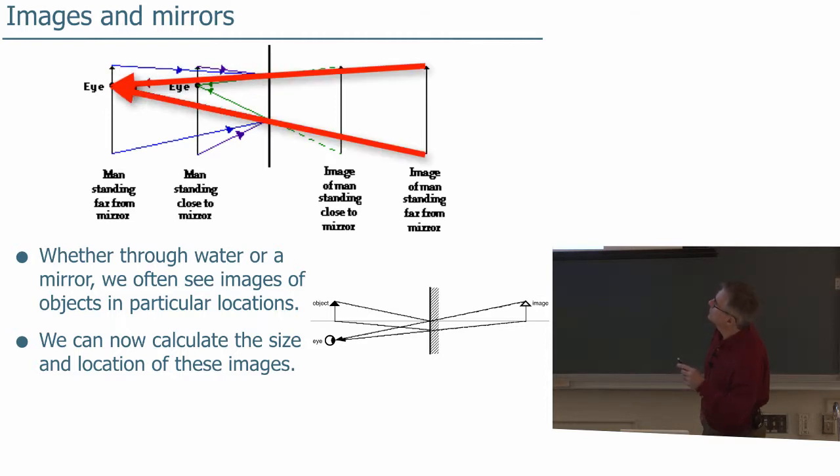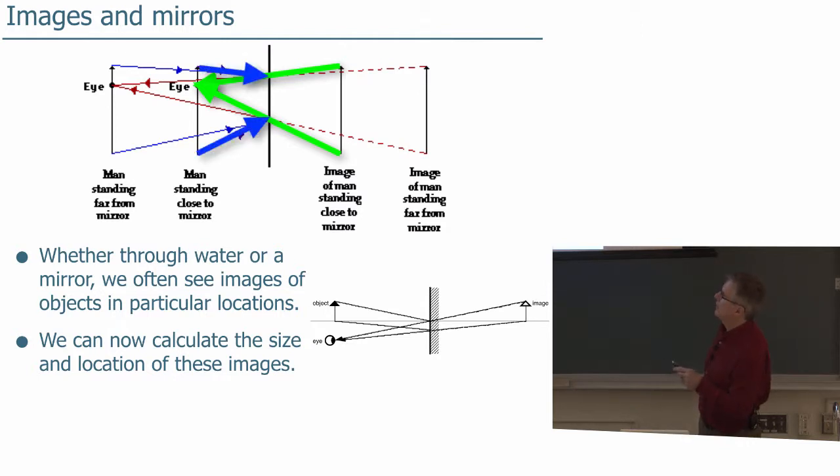Here's the image of the person standing far away from a mirror. If they move closer to the mirror, their image moves closer to the mirror as well. You can do that just by angle of incidence equals angle of reflection, as we saw in last week's lecture, and do the ray tracing with your ruler and a pencil.